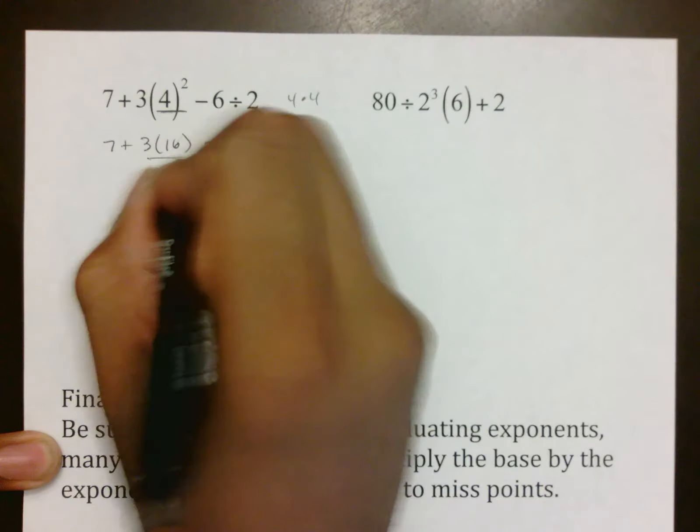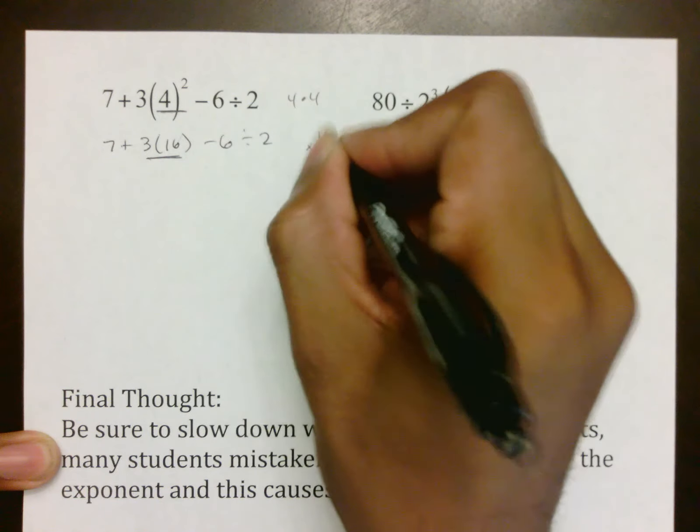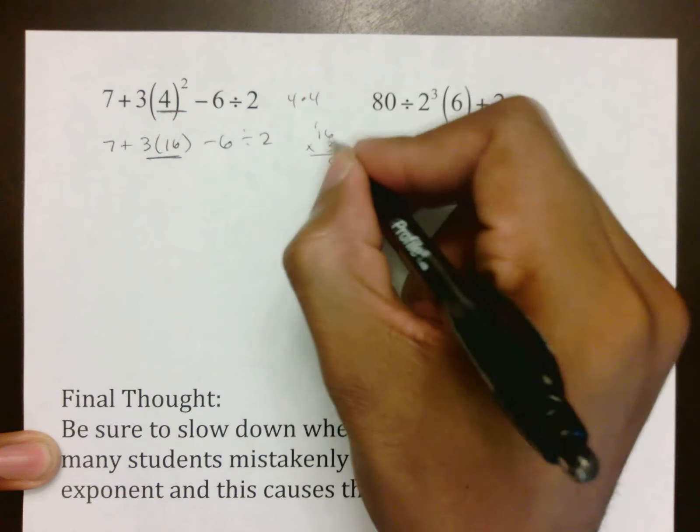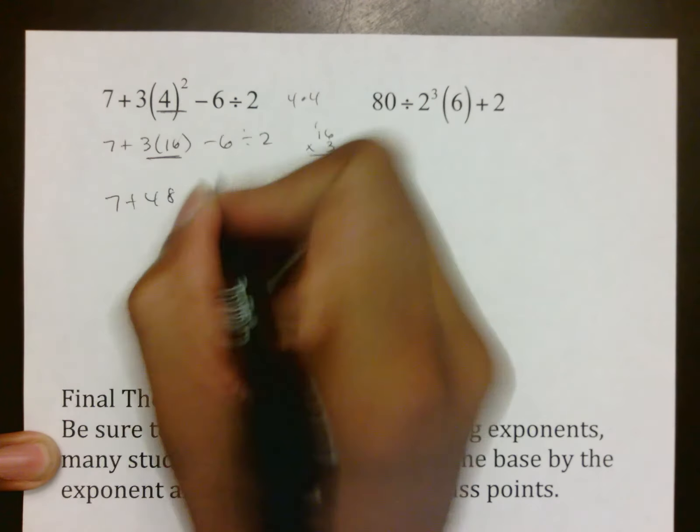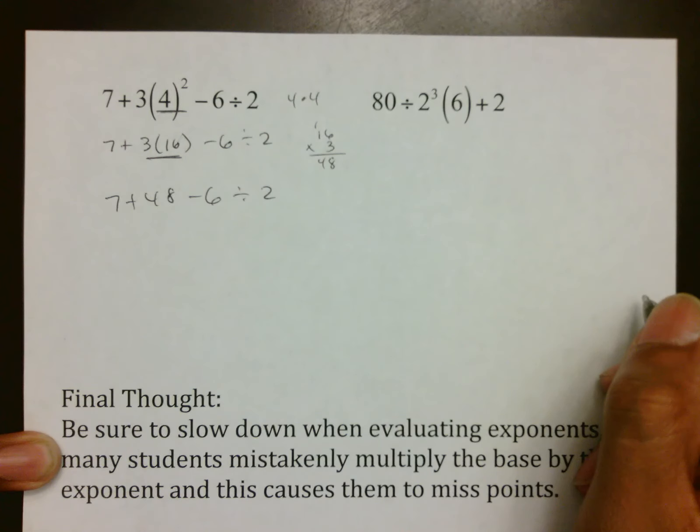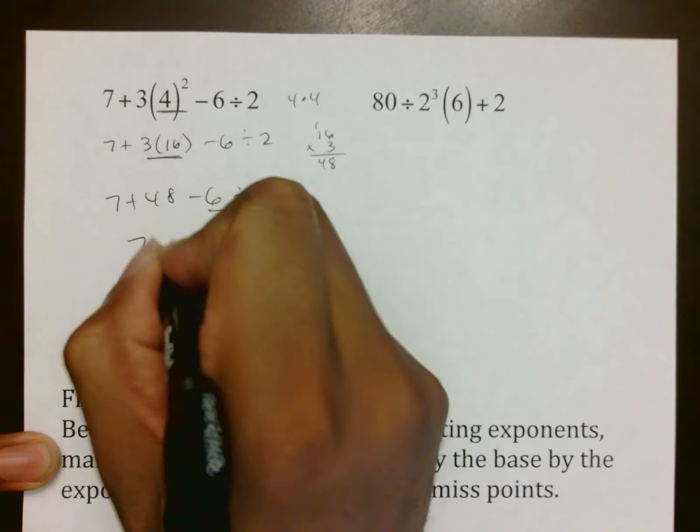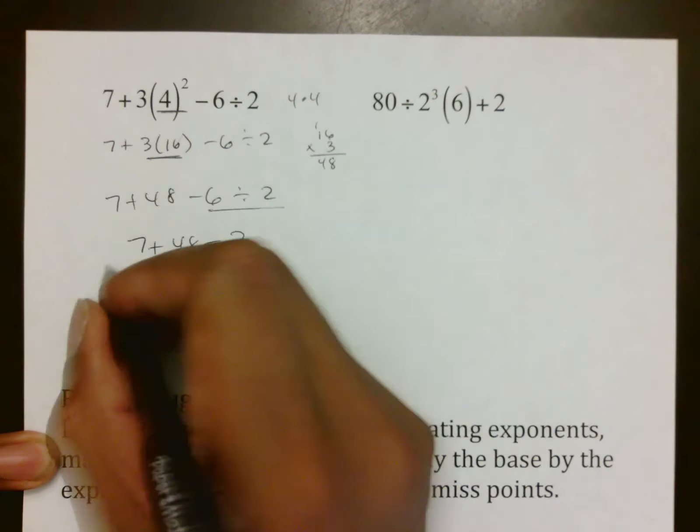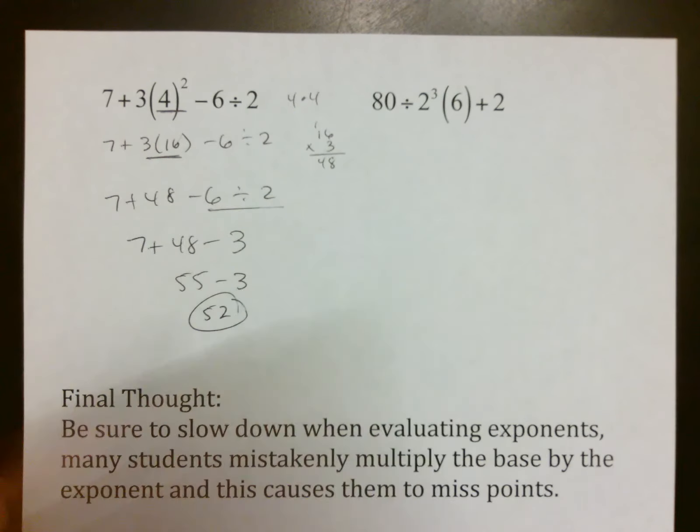Next thing I need to do is 3 × 16, and so I'm going to go off to the side for this and do my long multiplication. 3 × 6 is 18, carry the one. 3 × 1 is 3, plus one makes 4. So 7 + 48 - 6 ÷ 2. Looking for any VIP in line, there is one right there, your division, so 7 + 48 - 3. That turns into 55 - 3, which is 52.